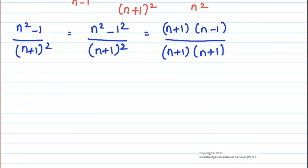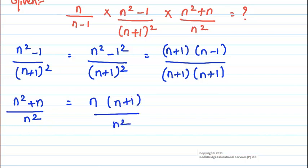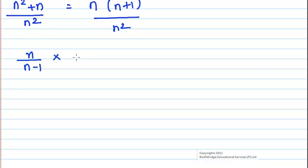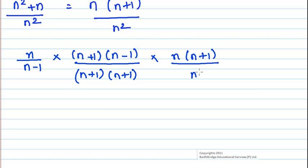The next term is (n²+n)/n². Here we can take n as common, giving (n+1)/n. Now we can write the full expression as n/(n-1) multiplied by (n+1)(n-1)/[(n+1)²] multiplied by n(n+1)/n².